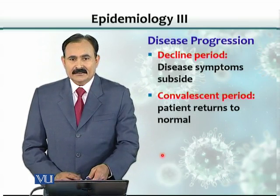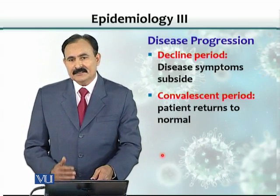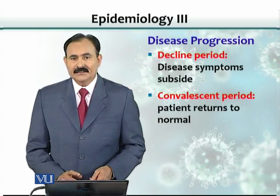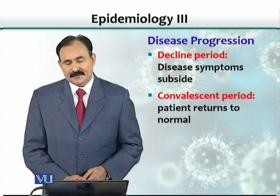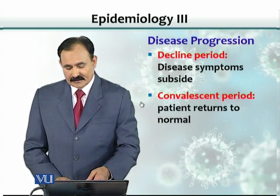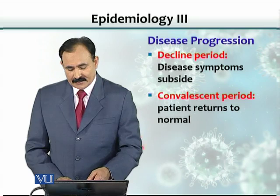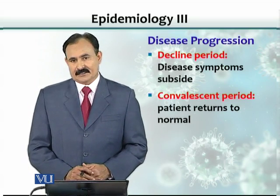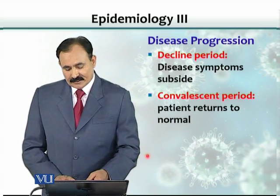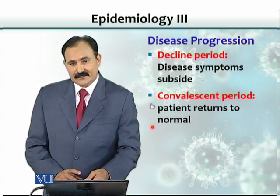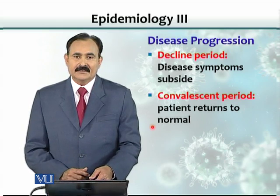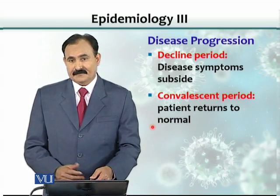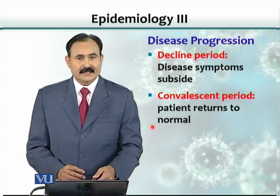After some time, the symptoms subside and there is a decline in the symptoms — this is called the decline period. The decline period is followed by the convalescent period, where the patient recovers from the disease. There are two outcomes: either the patient recovers, or the person may die if the infection is overwhelming and not treated properly.